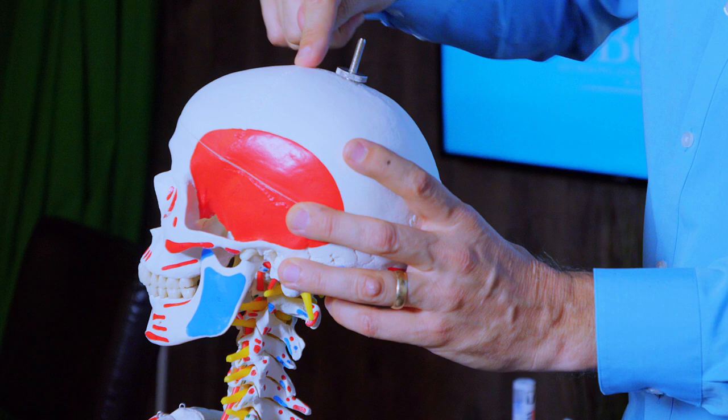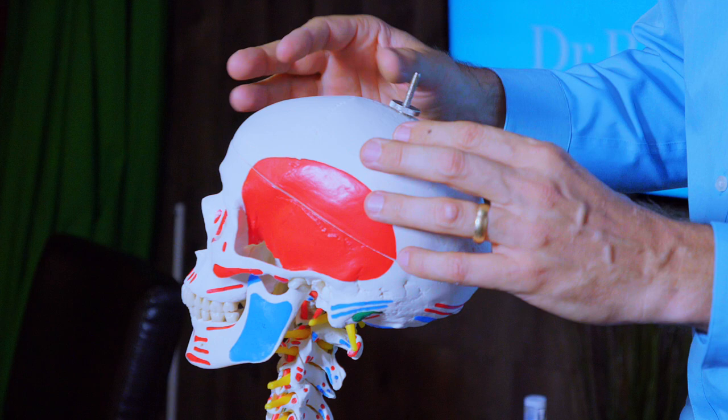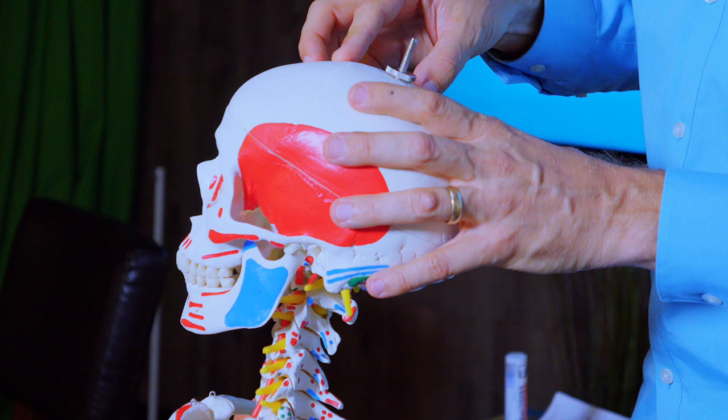There are little joints in the skull right through here, down here called sutures. And believe it or not, there's a lot of tension that can build up in the skull, even around these sutures, long after the injury.